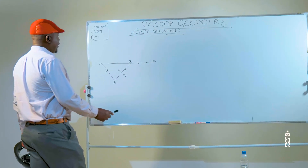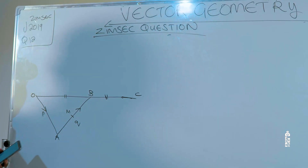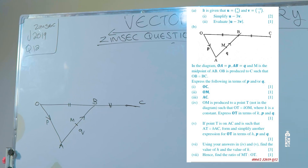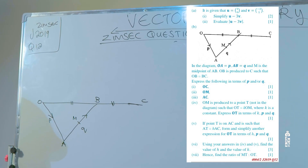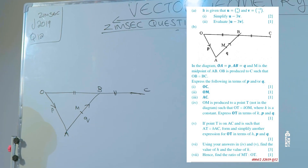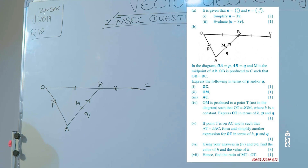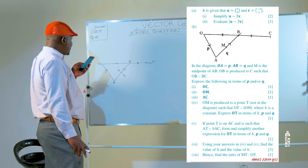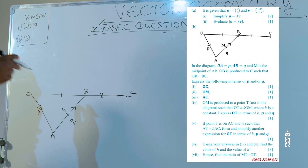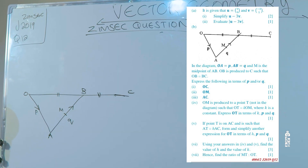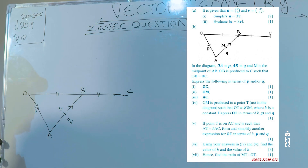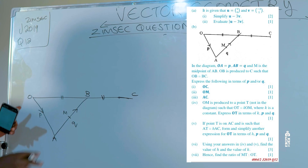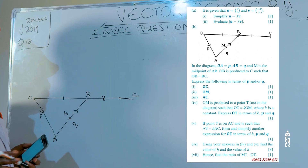On the board we have the following diagrammatic illustration. We are given that in the diagram vector OA is equal to P, AB is equal to Q, and M is the midpoint of AB. OB is produced to C such that OB is equal to BC.